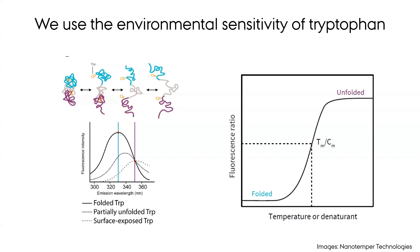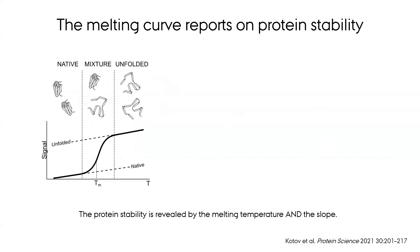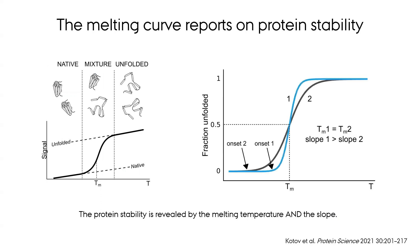If we measure the ratio of these two wavelengths as a function of temperature or denaturant concentration, we can use this to track the folding transition. To extract information about protein stability from these melting curves, you need to consider two things: first, the midpoint of the transition, but also the slope. For example, a protein with a lower melting point can be more stable at 25 degrees if the slope is different. So in this exercise, we will analyze both the melting temperature and the slope to get the apparent energy of unfolding, as described in this paper.